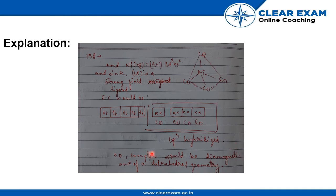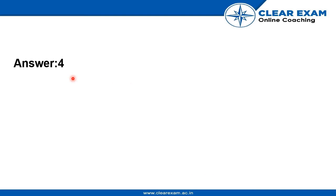A complex which is sp3 hybridized with no unpaired electrons will be diamagnetic in nature, and since it is sp3 hybridized, it will have a tetrahedral geometry. So the option would be option 4.